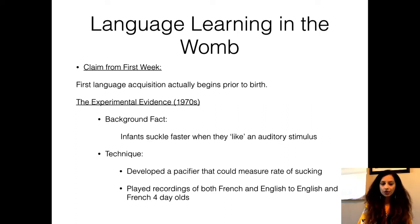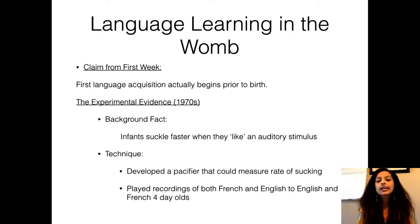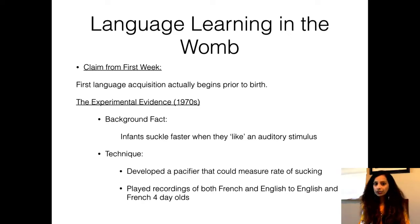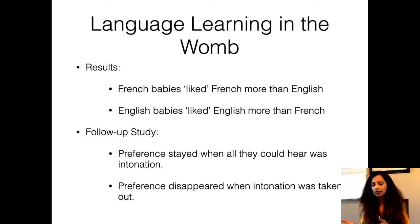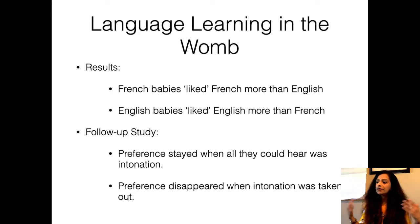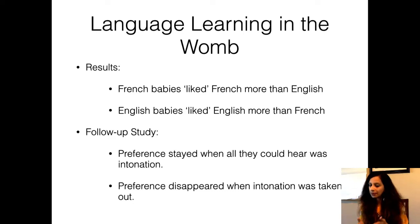There is experimental evidence from 1917 suggesting that language learning begins in the womb. Infants as young as four days old were given pacifiers to suckle, and they were played recordings of their first language — English for English babies or French for French babies. What they found was that French babies liked French more than English, and English babies liked English more than French. The reason is that in your mother's womb, if you are an English baby, you have been listening to English speech sounds, and that is a familiar, comforting sound after birth.